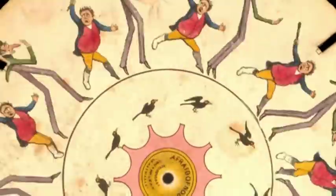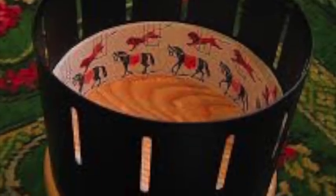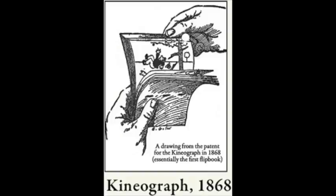It wasn't until 1865 that the definitive zoetrope was invented by William Ensign Lincoln, which had easily replaceable images. The zoetrope worked as the object rotated around — an image is shown, then no image, and then another — which created the illusion. The kinograph, or flipbook, soon followed in 1868, which was the first example of moving images not done in a circular process, but in linear form.